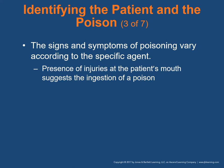Signs and symptoms of poisoning vary according to the specific agent. Presence of injuries at the patient's mouth suggests ingestion of the poison — especially look for things that may burn the mouth, particularly in children. Think about chlorine bleaches, battery acid, petroleum products.